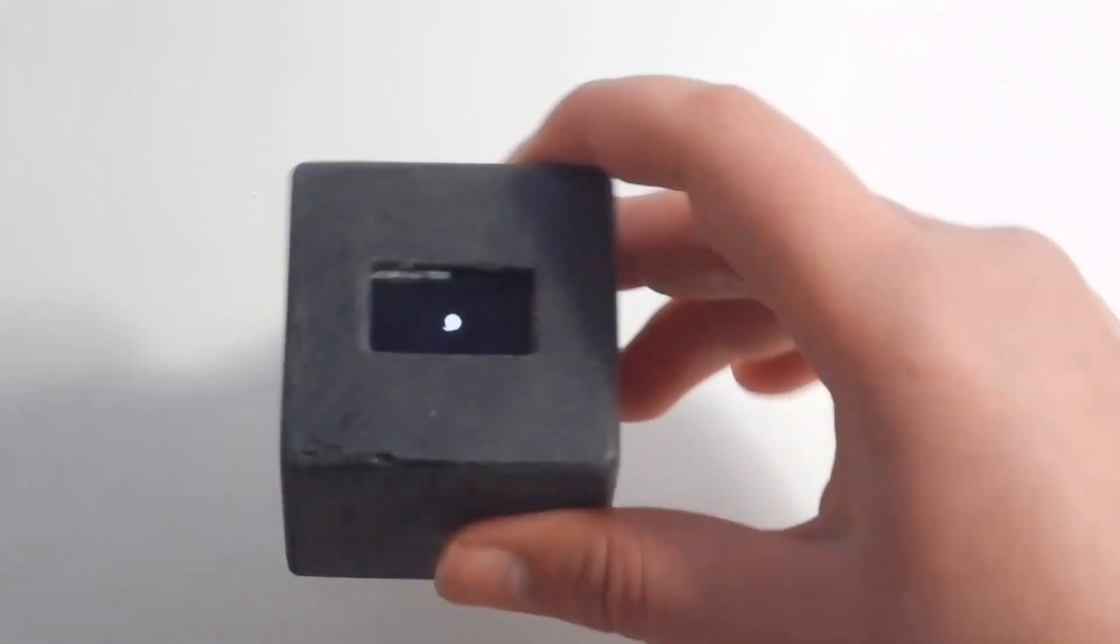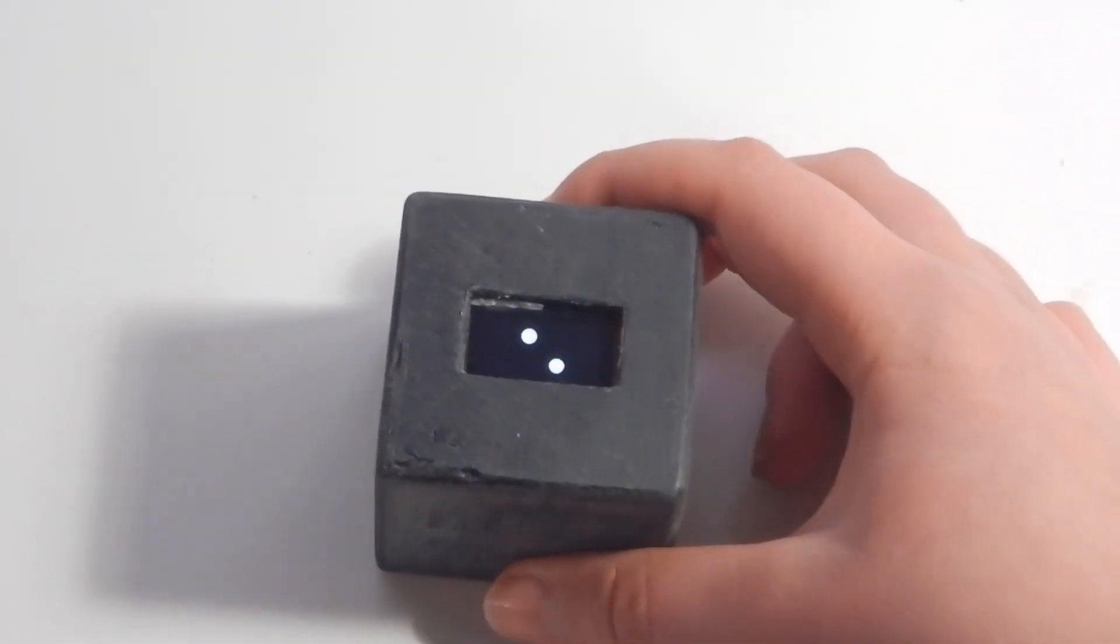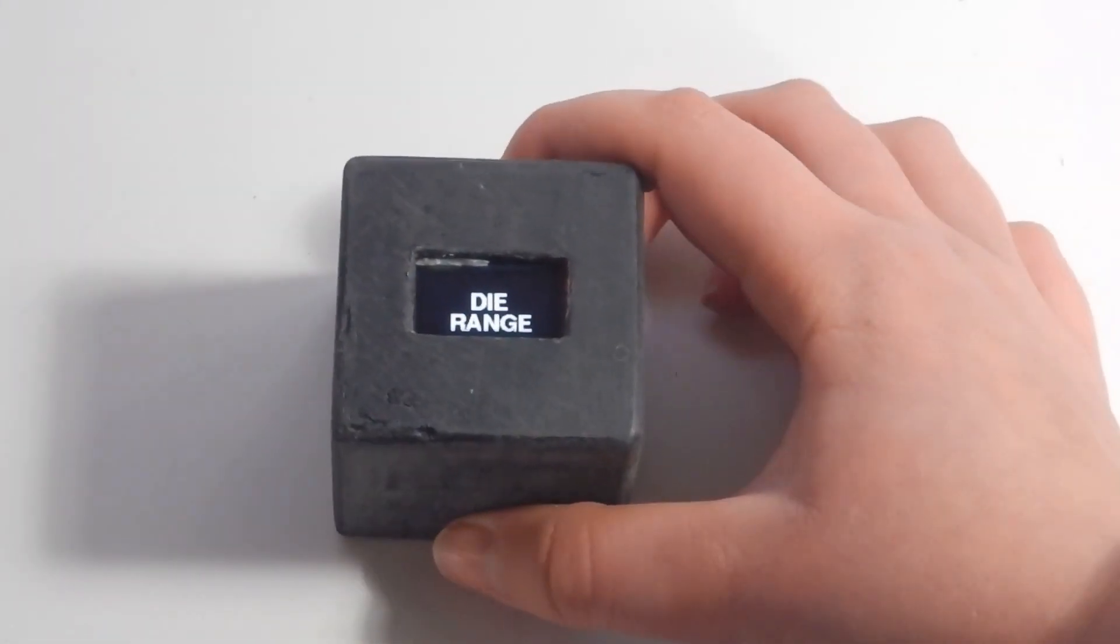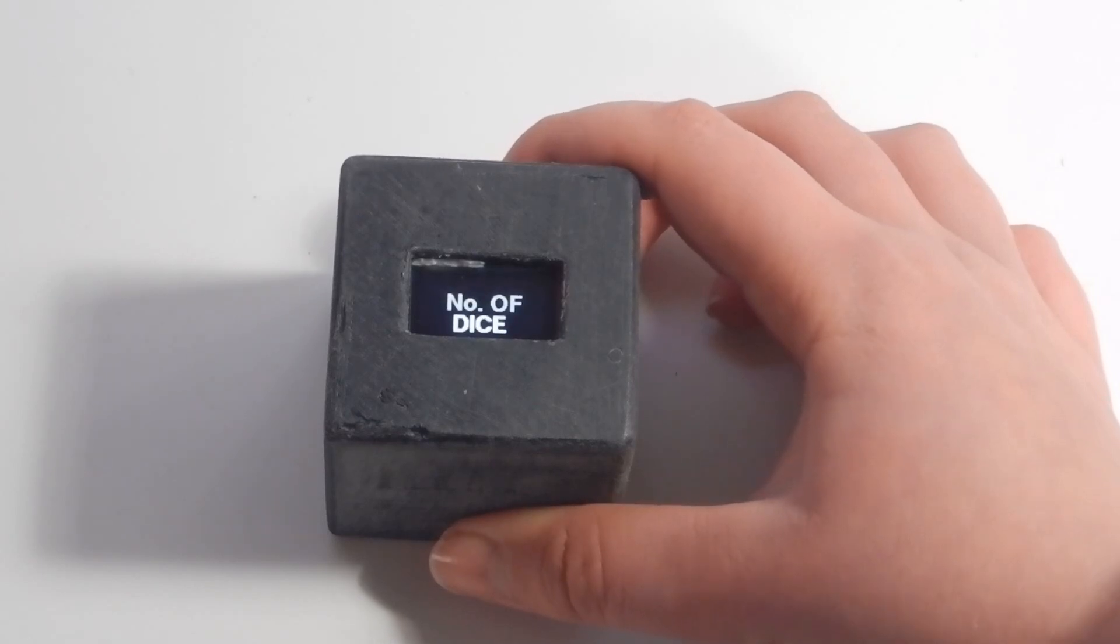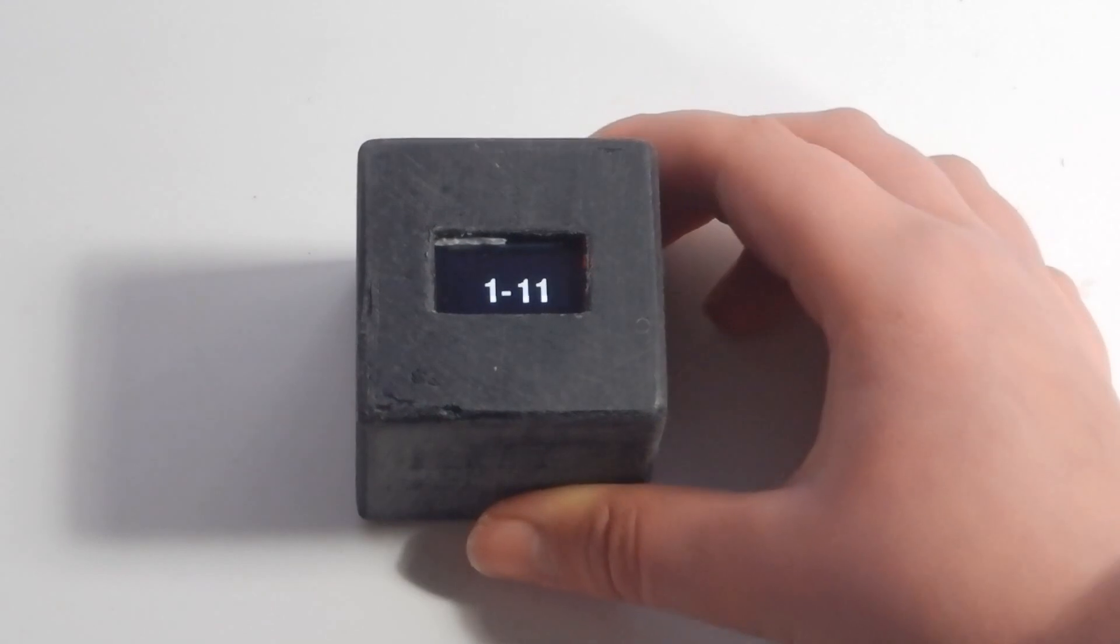As you can see it worked really well. You just shake it to roll the die and if you want to change anything you can go into the settings by holding the button at the back. And from there you can change the die range and even make it calculate multiple dices at once.